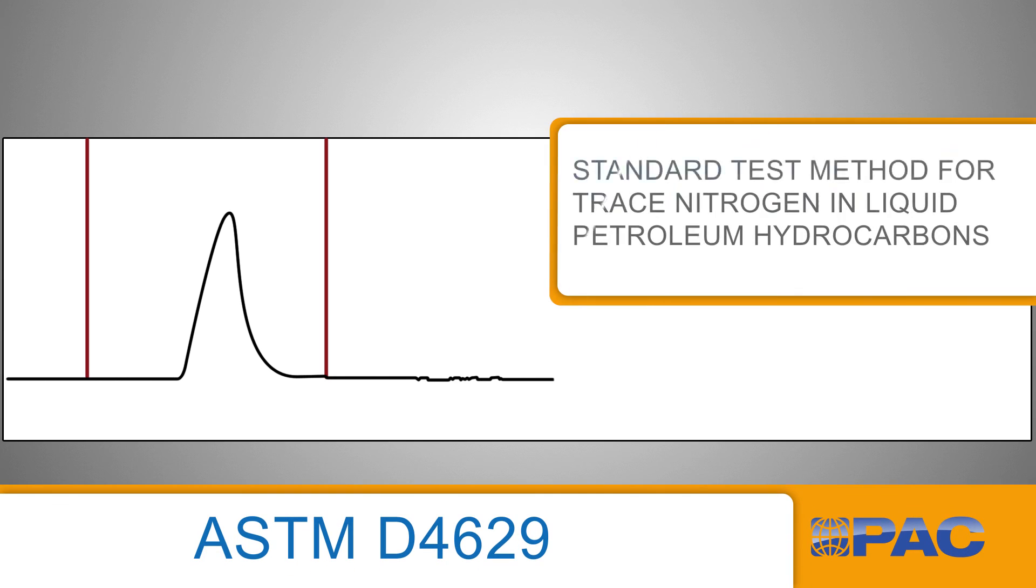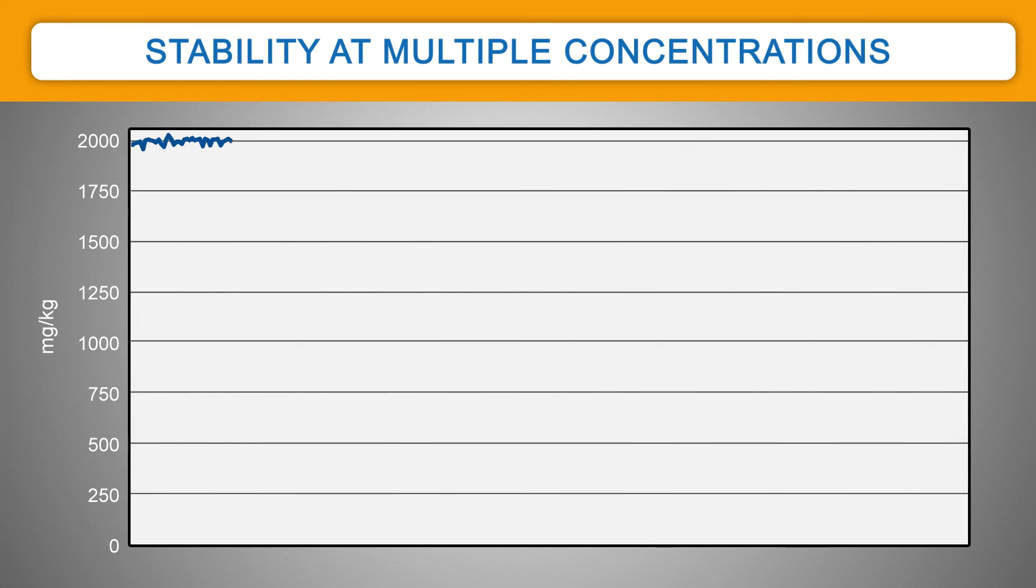The detection method is based on primary test method ASTM D4629 for high correlation to laboratory results. N-SURE can handle a wide range of products, including heavy diesel, by controlling the viscosity of the sample as it is injected.